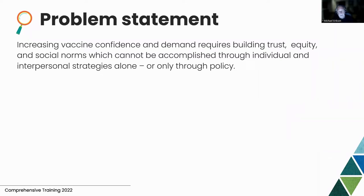There are 26 Prevention Research Centers in the United States funded by the CDC that have existed for 30 years. They've focused on community engagement on problems salient to their respective communities. At the beginning of the COVID pandemic, a supplement was provided to each Prevention Research Center to build vaccine confidence and uptake using long-established methods of working with communities involving trust, equity, and respect.